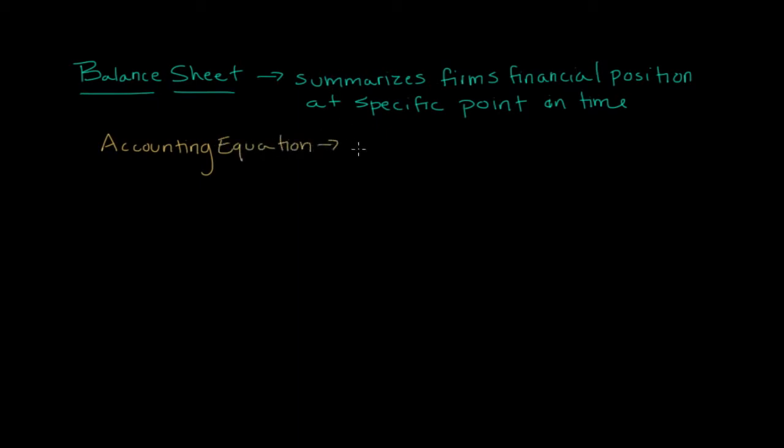The accounting equation is assets equals liabilities plus what we call owner's equity. These three items, or liabilities and owner's equity rather, always will equal assets.